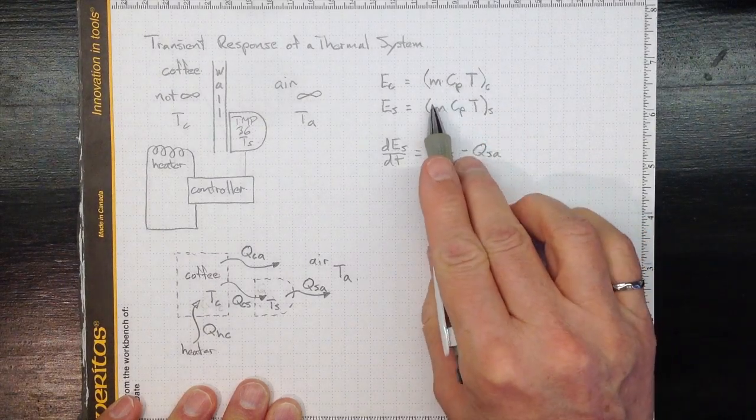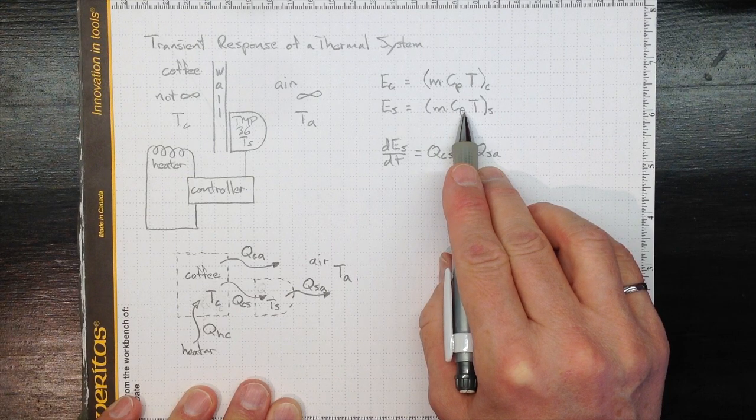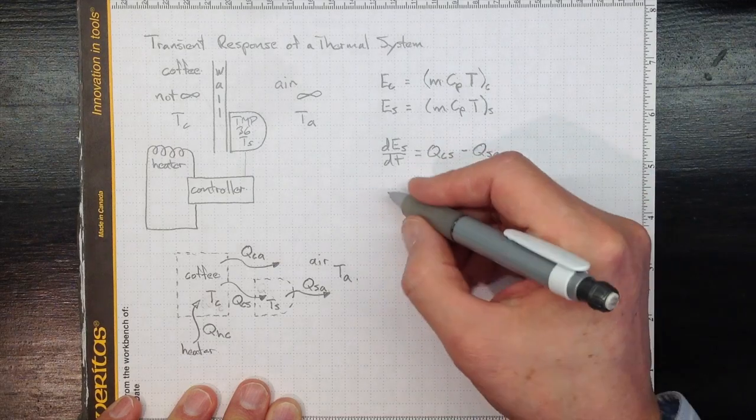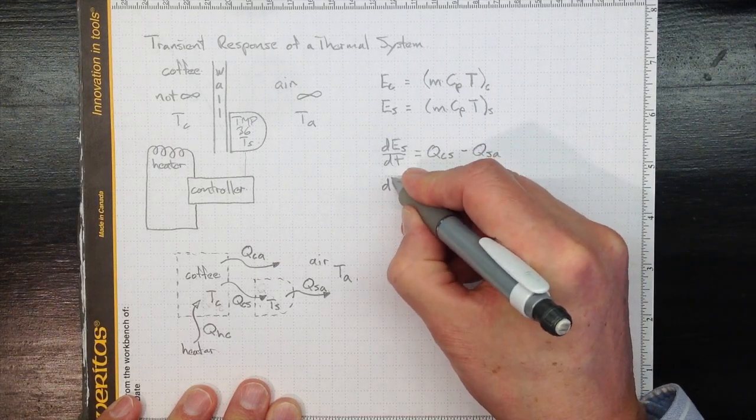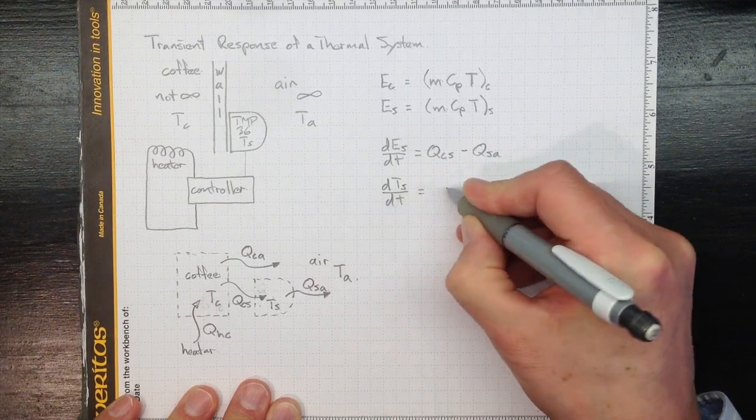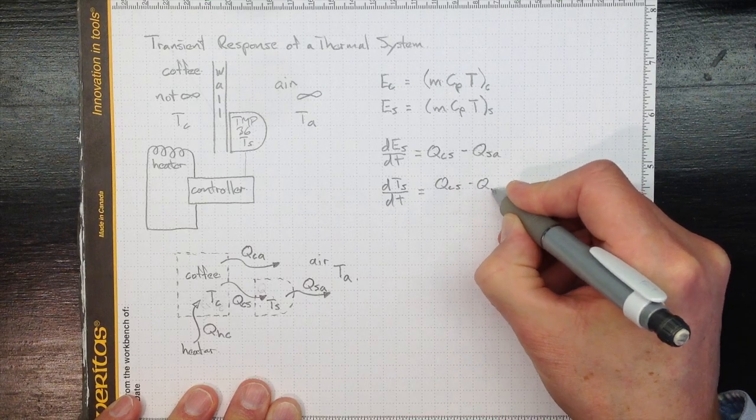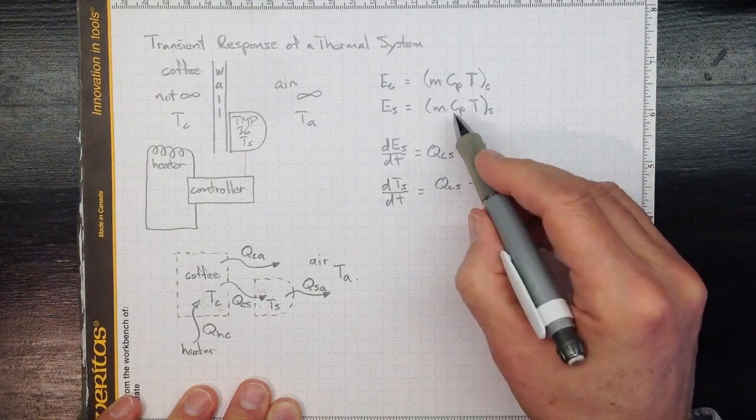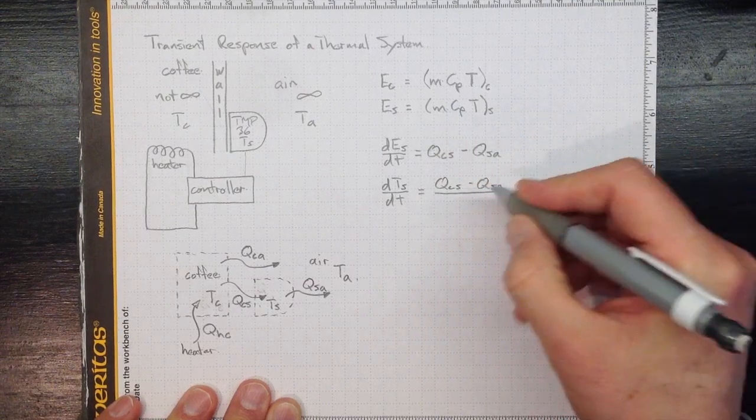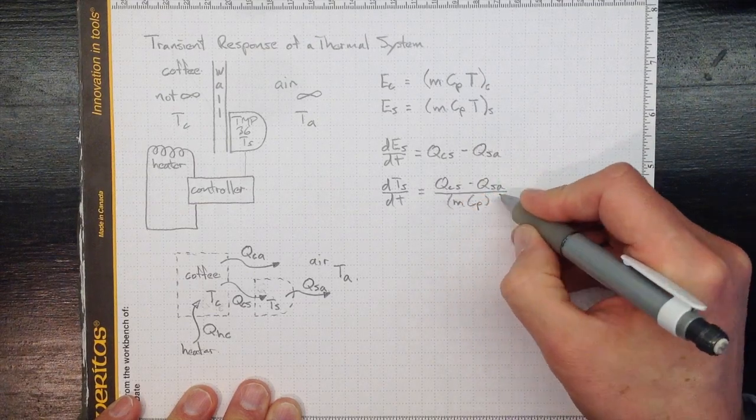And if we assume that the mass and the specific heat aren't changing, the sensor stays the same and its properties remain the same, then all that we're seeing is that the temperature is increasing. So the rate of change of temperature of the sensor with time will be QCS minus QSA, and then it will depend on the mass and specific heat divided by the mass and specific heat for the sensor.